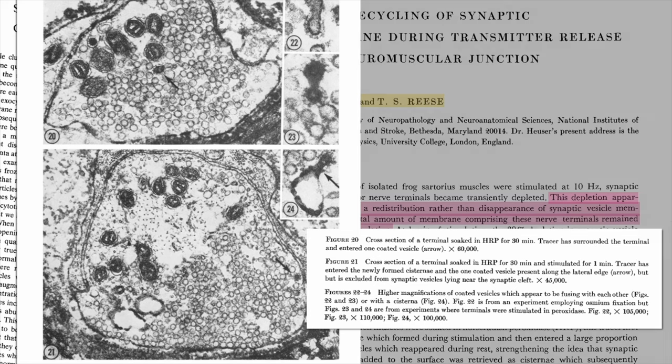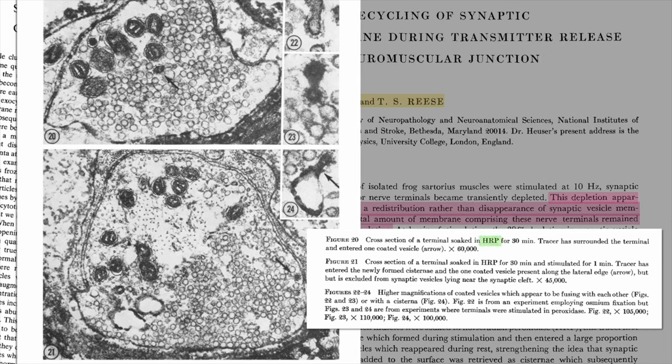To demonstrate that the extra membrane is recycled through endocytosis, the team filled the synaptic cleft with horseradish peroxidase, also abbreviated as HRP. HRP is an enzyme that produces a dense reaction that can be visible with an electron microscope as this black dense material.